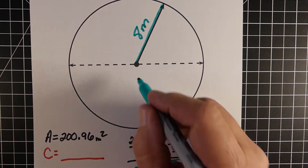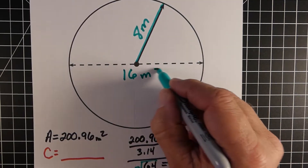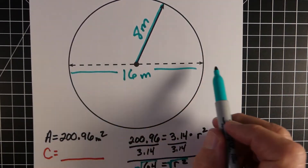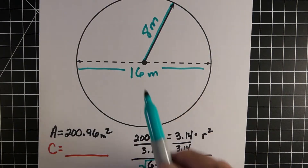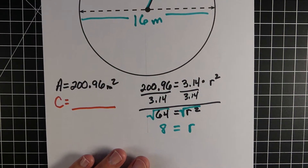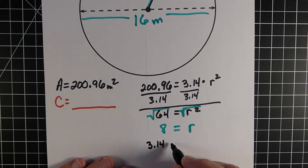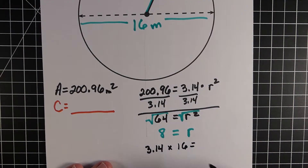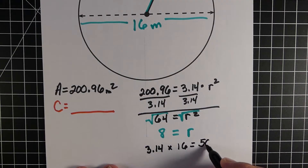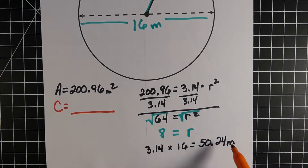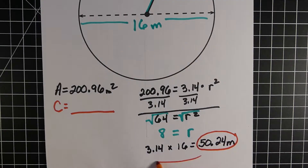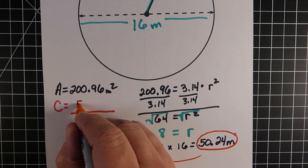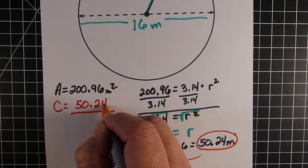Now what we need to find the circumference is the diameter. Since the diameter is twice the radius, it's 16. We plug that into our circumference formula: pi times diameter equals circumference. So we take 3.14 times 16 and we get 50.24 meters. That is our circumference, or the distance around the circle. The answer is 50.24 meters.